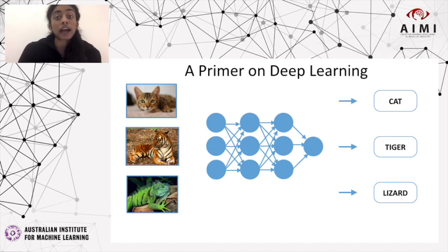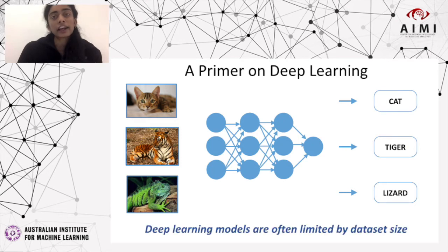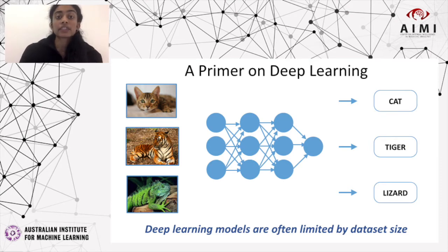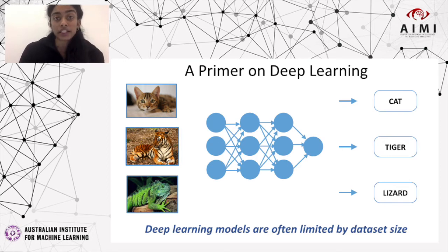Although deep learning techniques have demonstrated high accuracy on numerous prediction tasks, they are limited by the size of the dataset. Large, high-performing neural nets designed to classify images are often trained on datasets of hundreds of thousands of labeled images. Often, and especially in the field of medicine, datasets of this size can be difficult or even impossible to obtain. Training deep neural nets on small datasets often results in poor accuracy and lack of generalization ability.